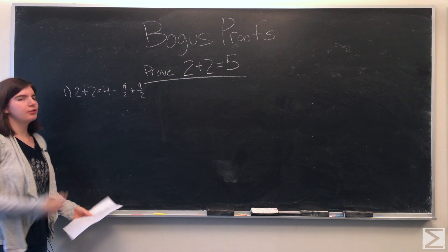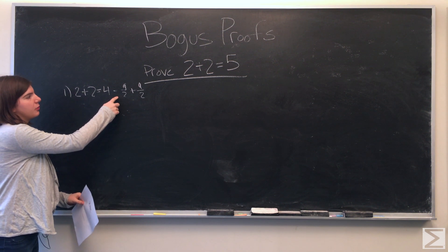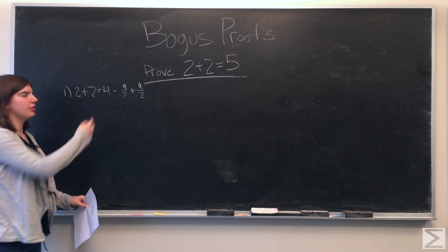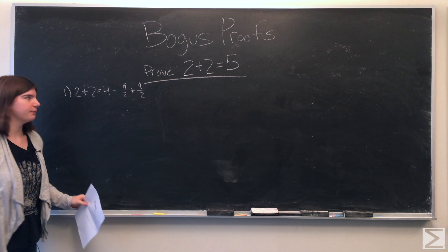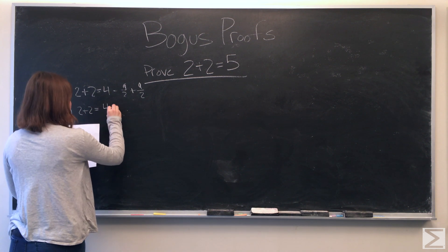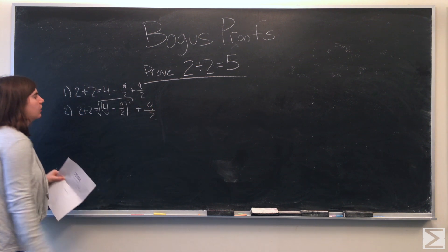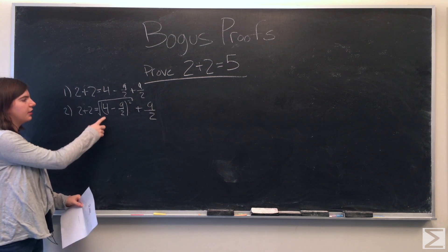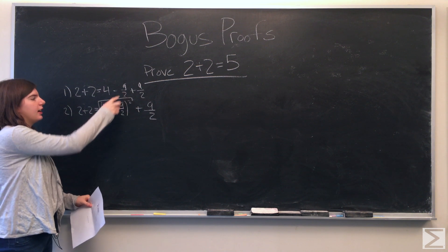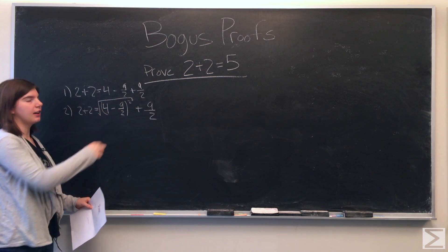We know that 2 plus 2 is equal to 4, and we can also subtract 9 halves and add 9 halves, and it's still equal to 4. All we did in this step was we rewrote 4 minus 9 halves as the square root of 4 minus 9 halves, squared.